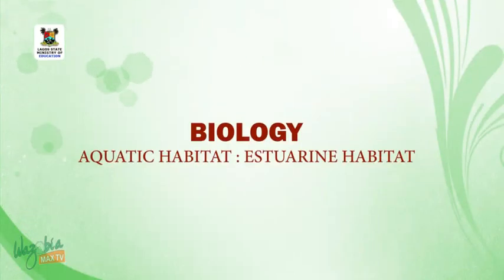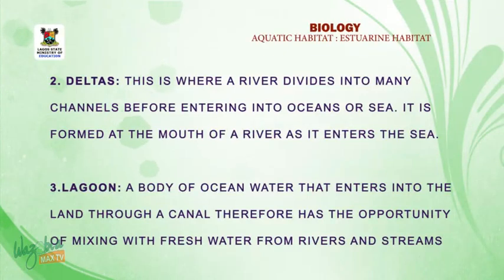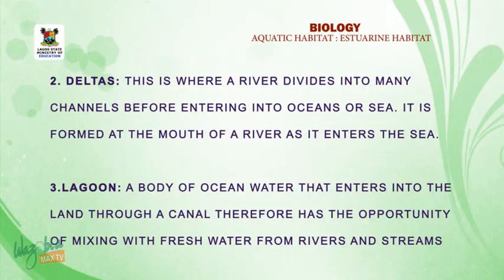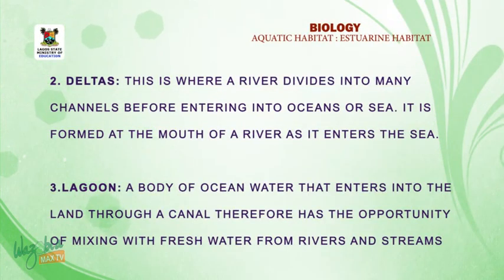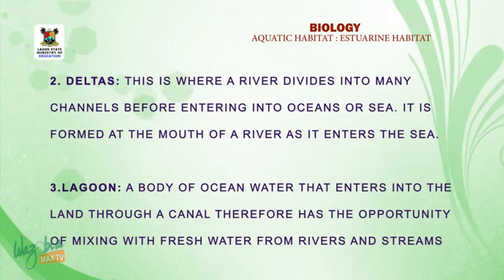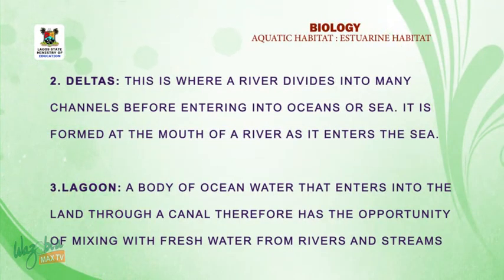Welcome back. Now let's look at number two: delta. A delta is where a river divides into many channels before entering an ocean or sea. It is formed at the mouth of a river as it enters the sea. Number three: lagoon. A lagoon is a body of ocean water that enters into the land through a canal and has the opportunity of mixing with fresh water.